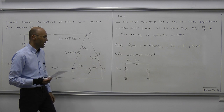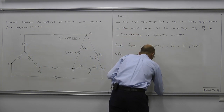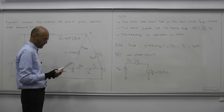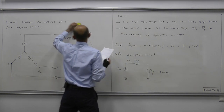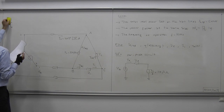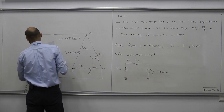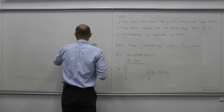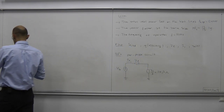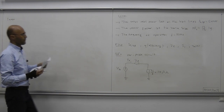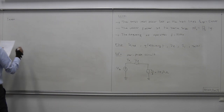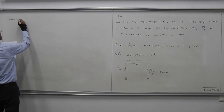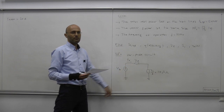ZL is given as 33 plus J9 ohms; hence ZL over three equals 11 plus J3 ohms. Since IA is given, we know its effective (RMS) value: the magnitude was 20 times square root of two, so the effective current is 20 amps.